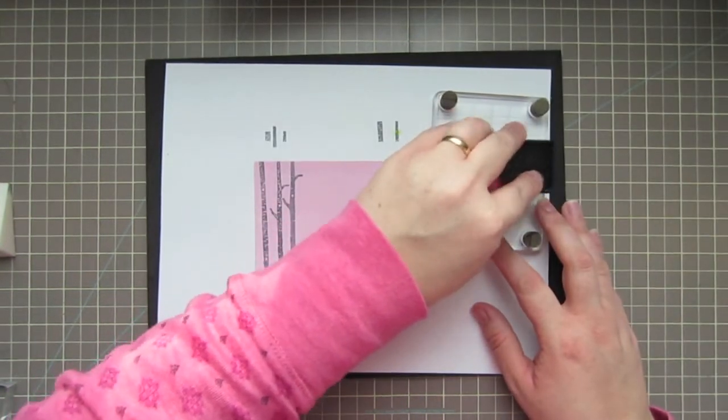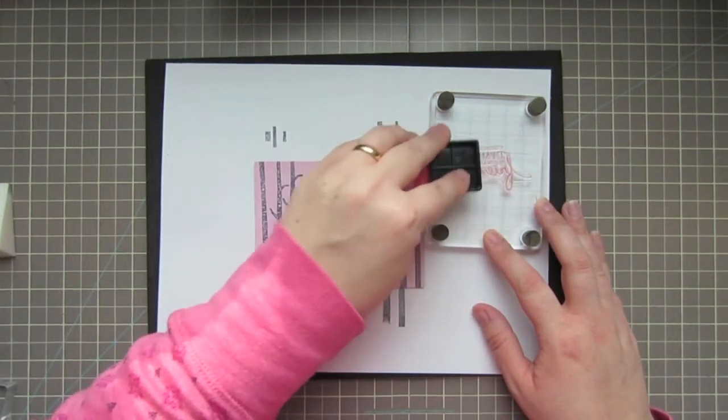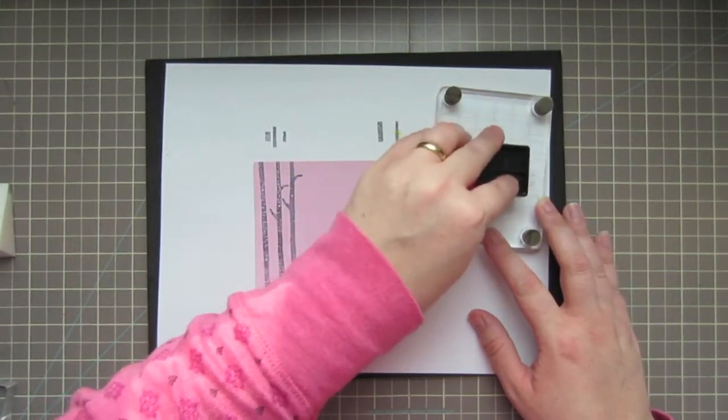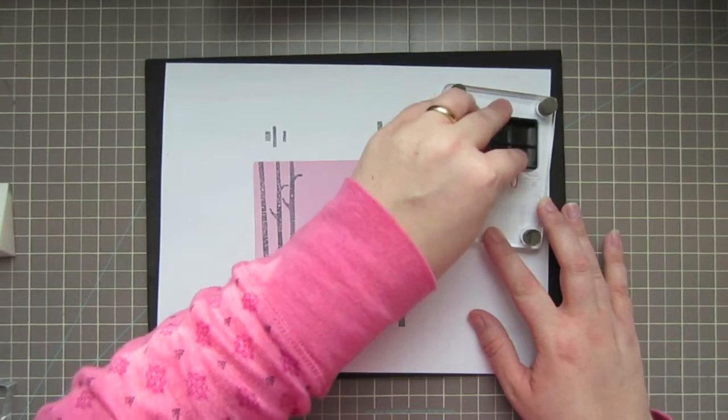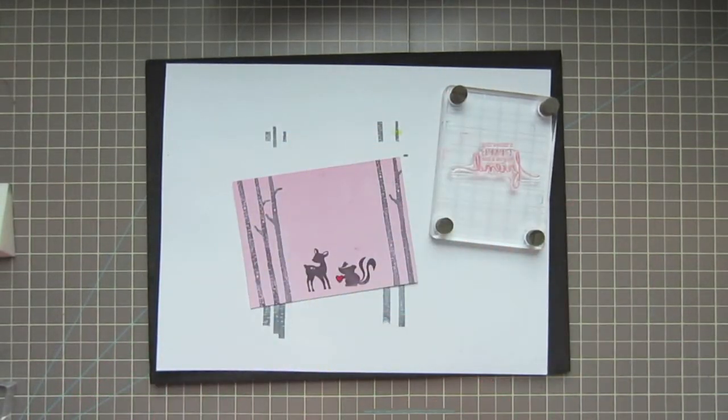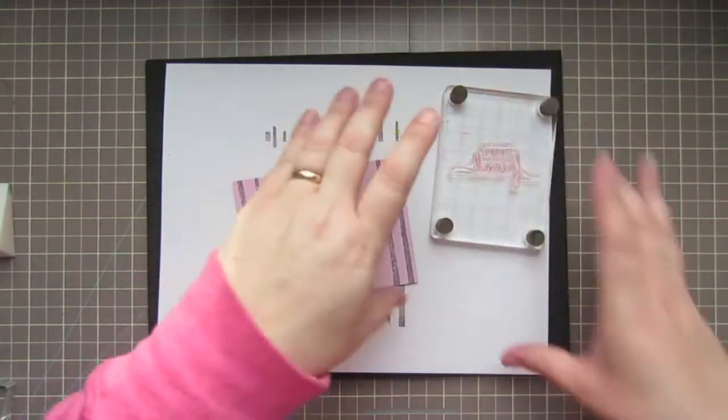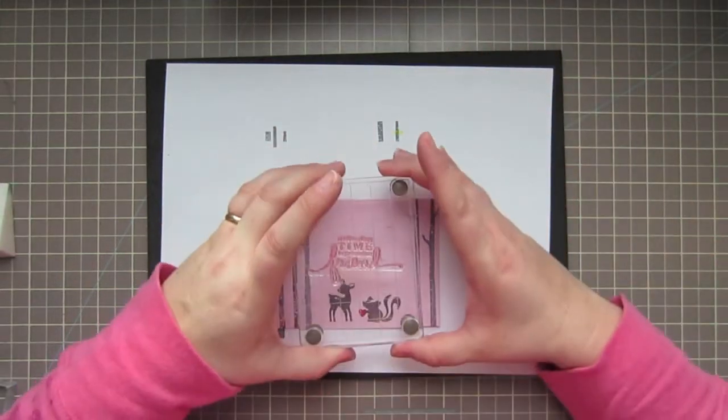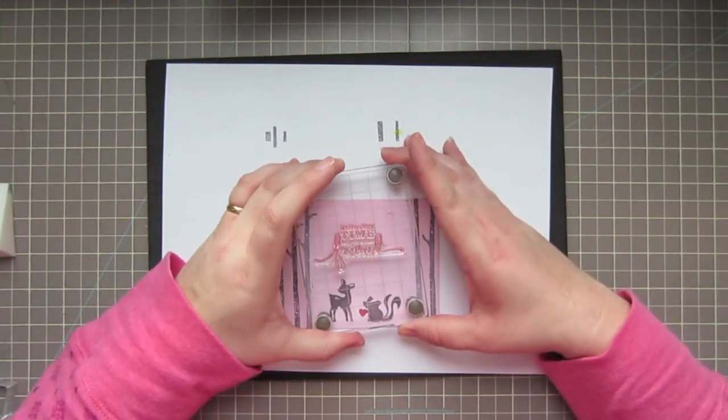I'm inking that up in some Berry Sorbet ink from Paper Trey. I thought it was a good match for the pattern paper. Then I can go ahead and line that up above. It says 'takes a long time to grow a friend.' Stamp that down.